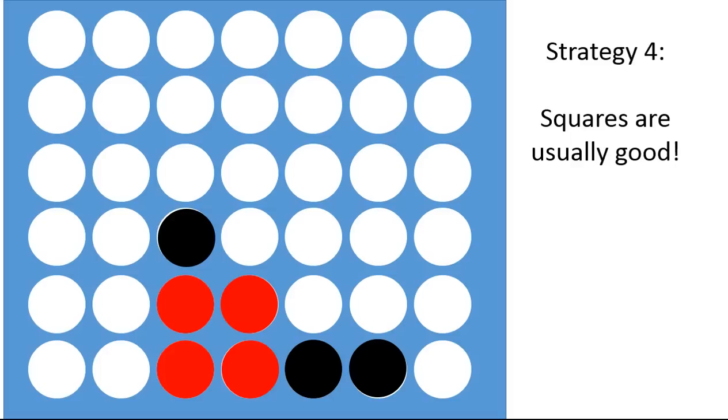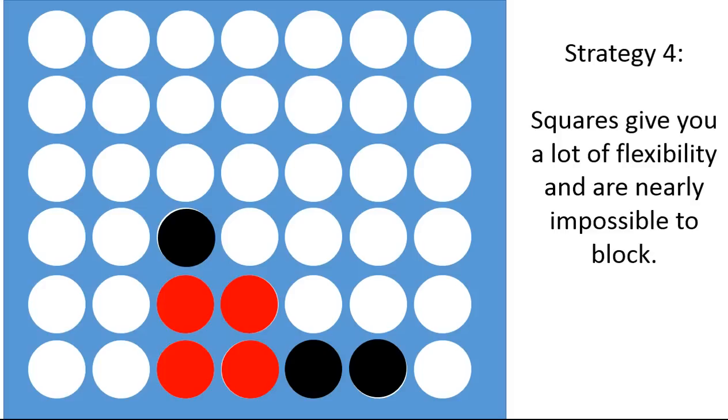Strategy four, squares are usually good. Notice that the red player here has four pieces that form a square. When you form a square, you have a lot of options in all directions. They're difficult to block. You can block some of the square, but it's pretty much impossible to block all parts of the square.